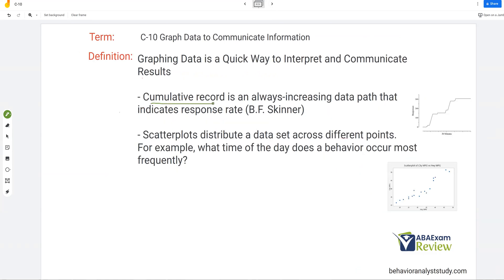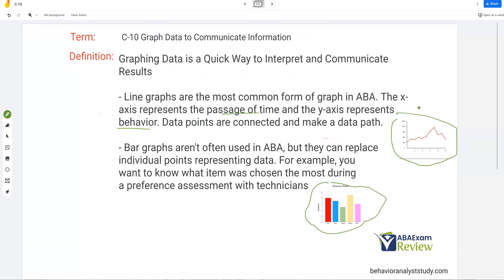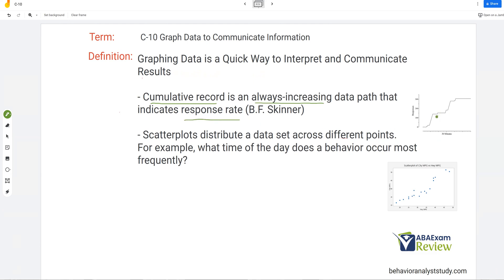Now, continuing: cumulative records. Cumulative records, of course, were popularized by B.F. Skinner when he was doing his Skinner box experiments. And a cumulative record is an always-increasing data path that indicates response rate. What's very important to note about cumulative records is they always increase. Cumulative records never go down. You can see on our image here, even when it's flat, it's never decreasing. If we go back to our line graph, it can go up, it can go down, it can trend. Cumulative records aren't like that. They indicate response rate. A flat response rate simply means no responses. They're total responses. So you start at zero, and by the time we get to the end of this cumulative record, we have over 300 responses. It's a cumulative record of responses.